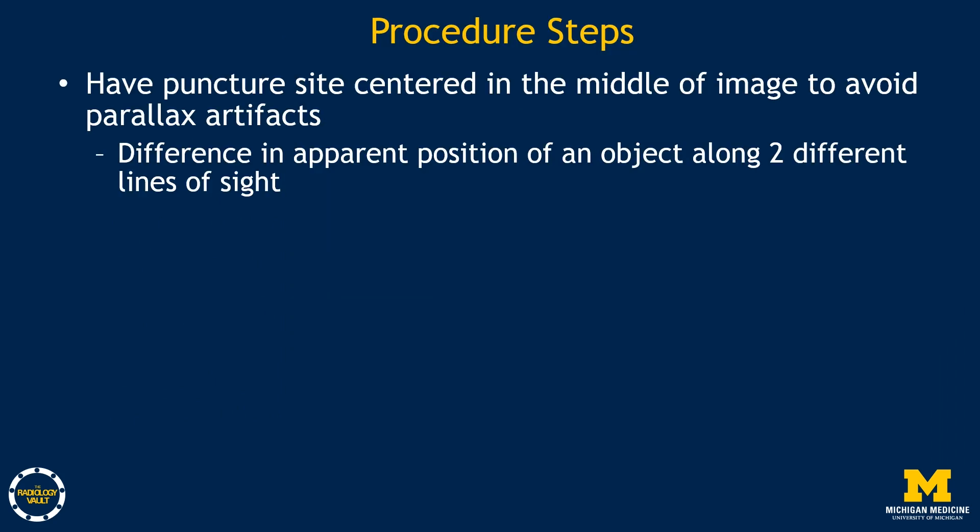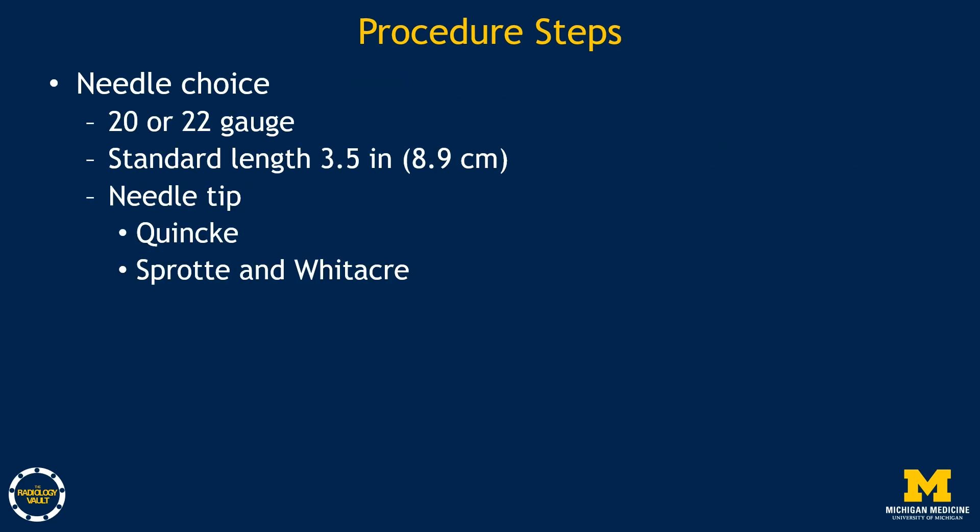It's important to have the puncture site centered in the middle of the image to avoid parallax artifacts. There are several factors to consider when choosing a needle. Most neuroradiologists prefer a 20 or 22 gauge needle. Smaller gauge needles are associated with a lower risk of post-dural puncture headache, but bend and deform more easily, have slower CSF egress, and are associated with a longer procedure time. Most standard LP trays come with a needle that is 3.5 inches long, and larger patients may require a longer needle.